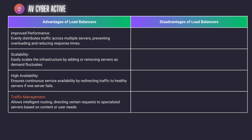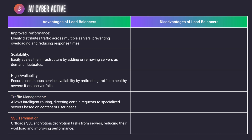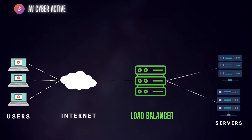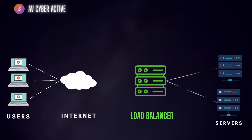The fourth advantage is traffic management — it allows intelligently routing certain requests to specialized servers based on content or user needs. You would see this in banking environments where session continuity is important, and traffic will be intelligently redirected to the server where the session is persistently maintained. The last advantage, which is SSL offloading, is that it offloads SSL encryption and decryption tasks from servers, reducing their workload and improving performance. Network administrators can consider this option so that the load balancer sitting in front of the internet handles the SSL encryption and decryption.